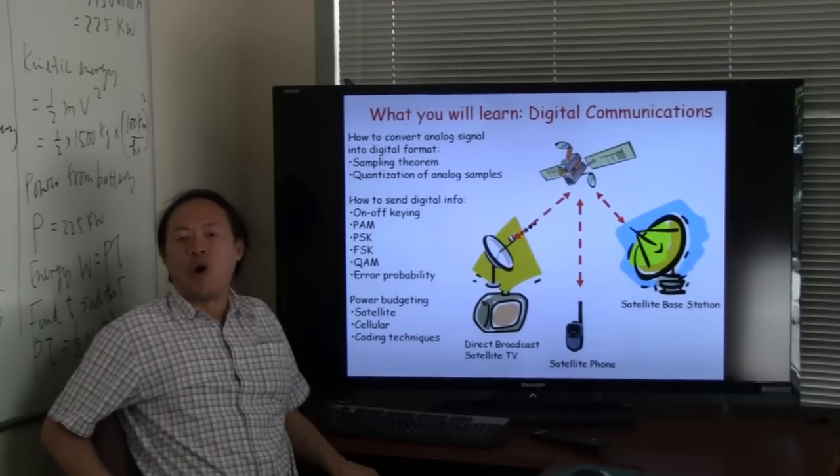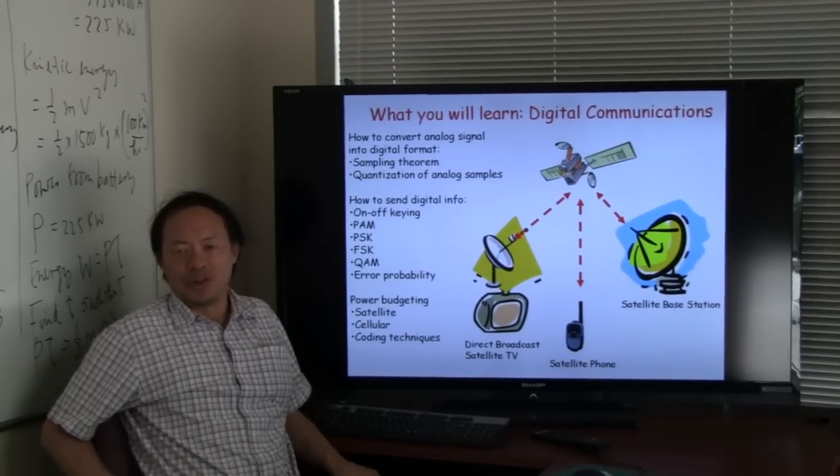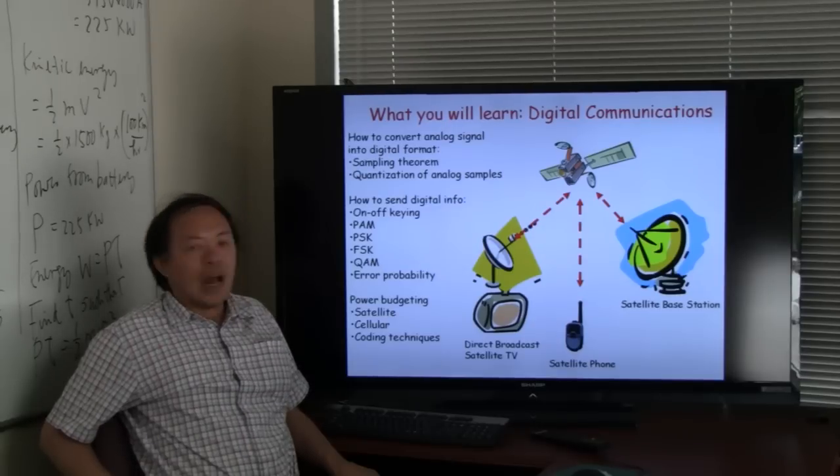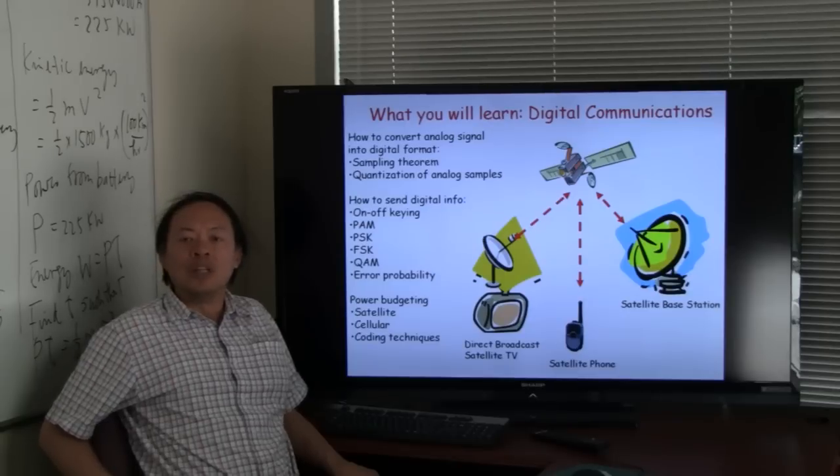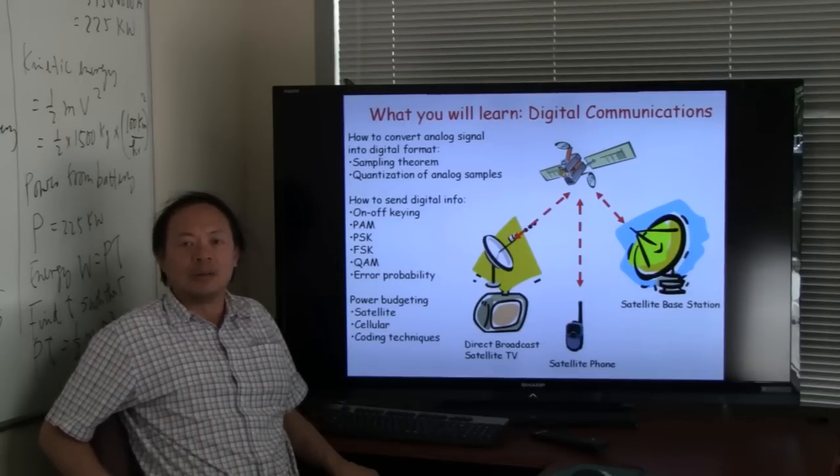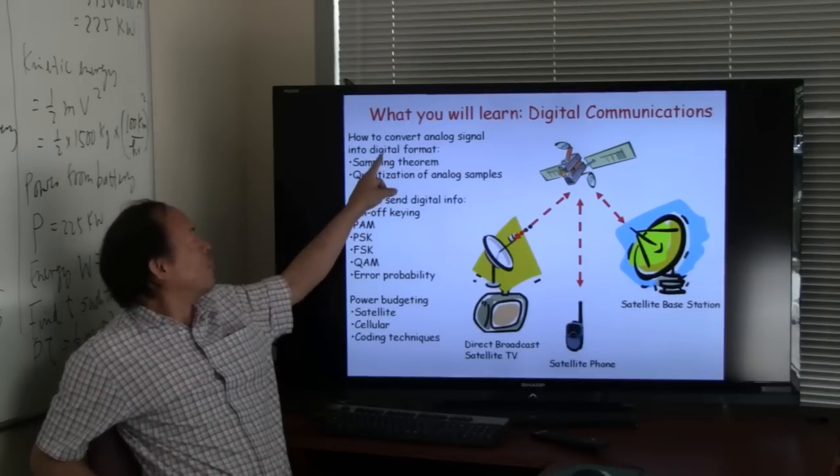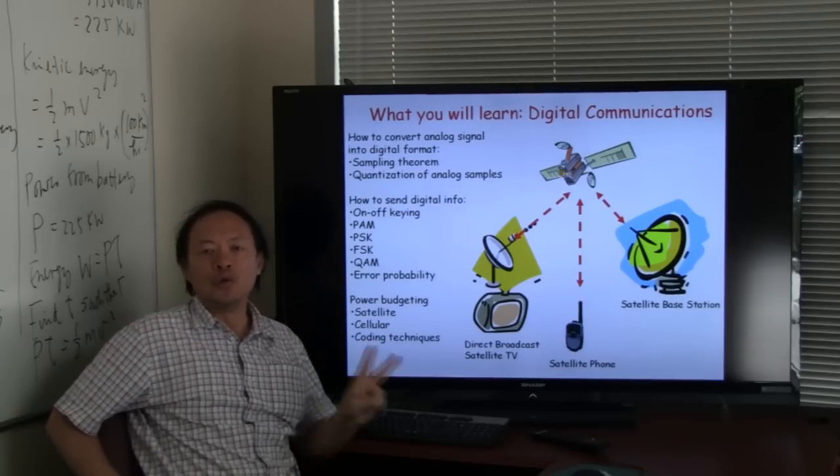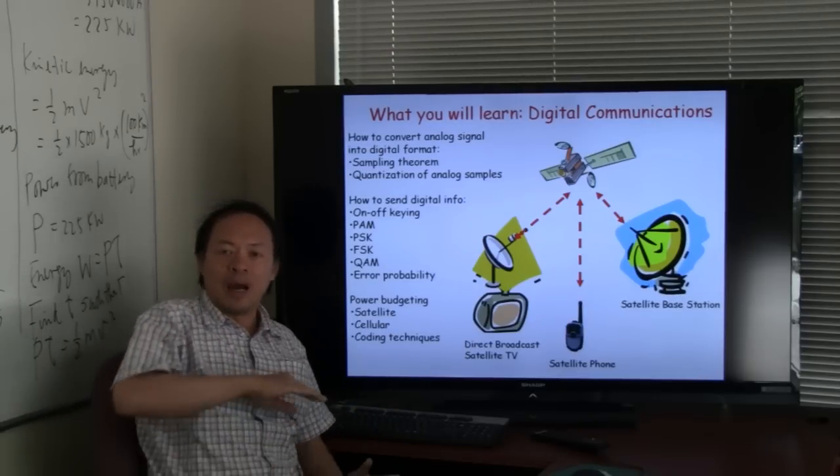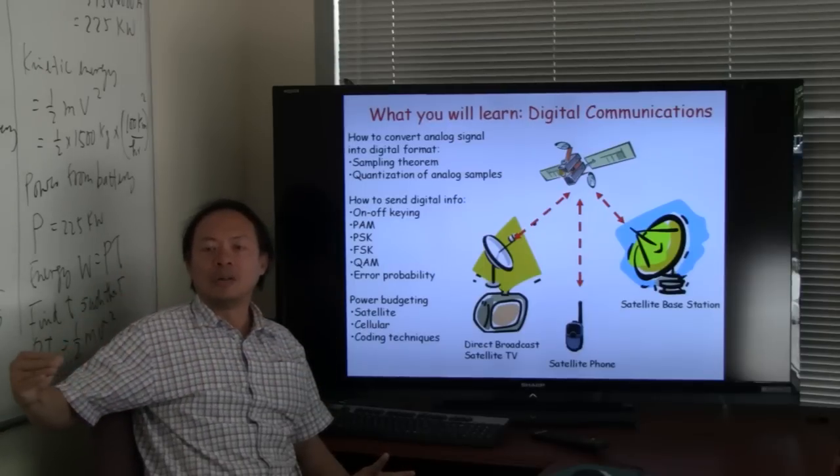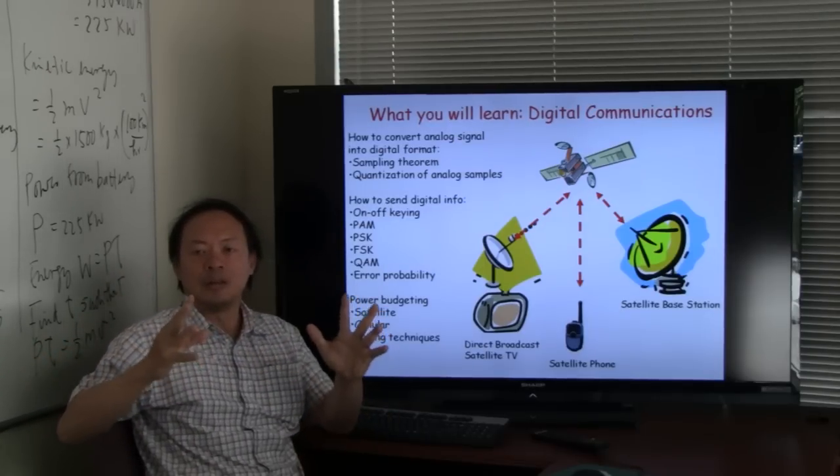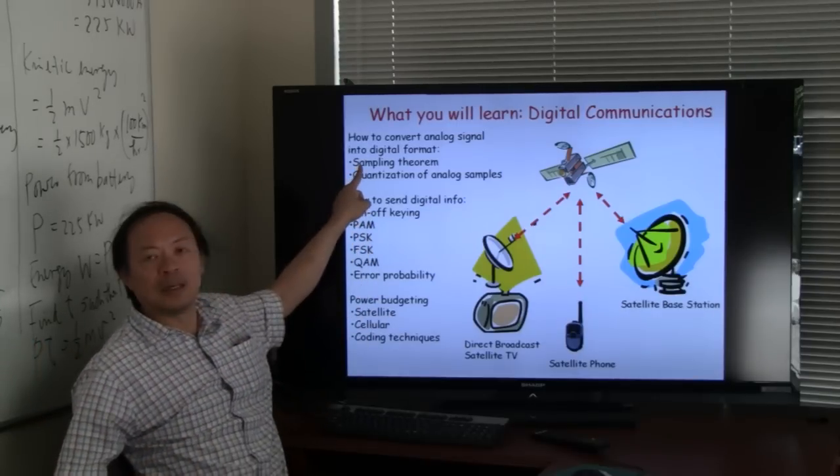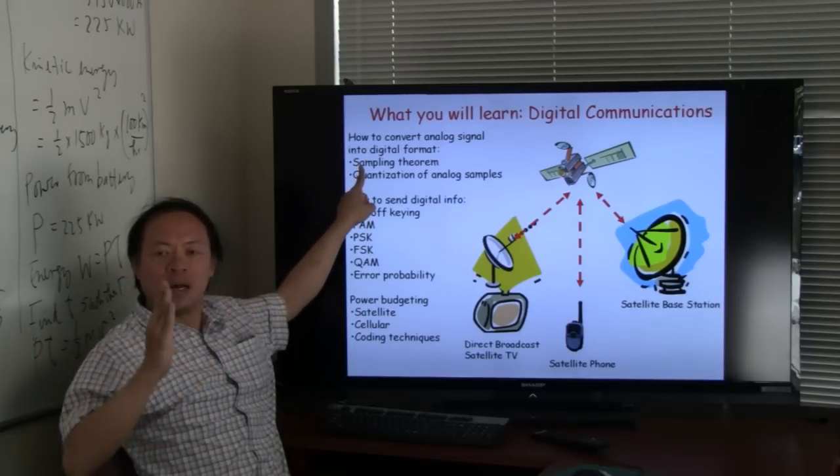The larger part of the course is about digital communications beyond analog communications. Now before we can transmit digital signal, we need to convert analog signal into a digital format. And in this case here, it involves a two-step process. Bear in mind that we have an analog signal that we need to convert into a digital format. So the first step involves sampling the analog signal at discrete time.